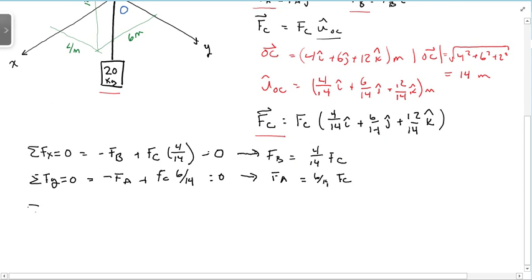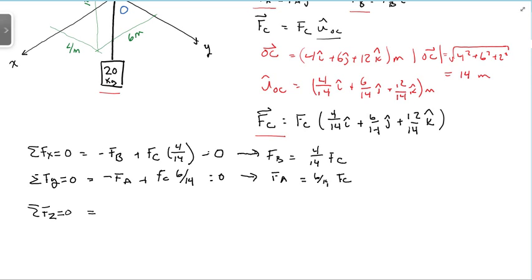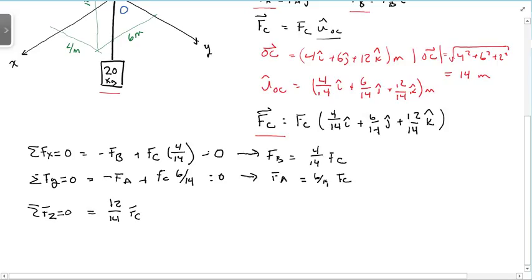And then I have the sum of the forces in the z direction equals 0. And that gives me, the springs don't have any z component, only the weight and the C. So I get 12 over 14 FC minus 20 kilograms times 9.81 meters per second squared. And that has to equal 0.